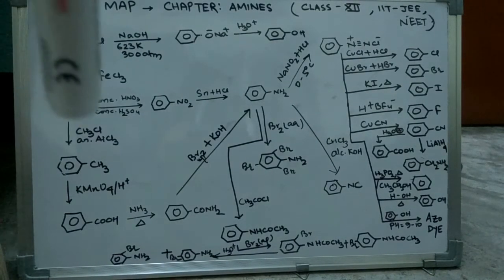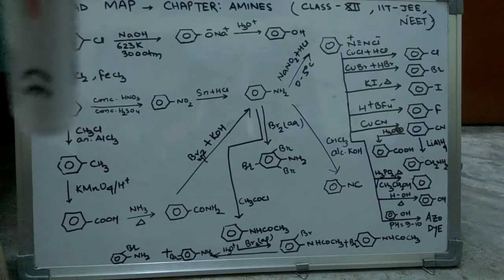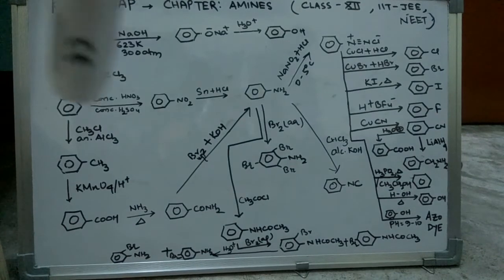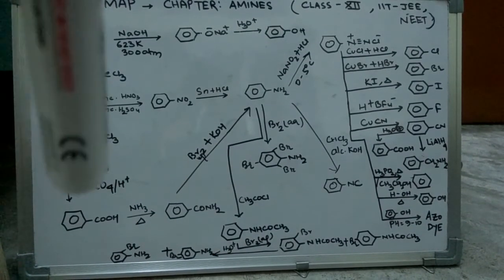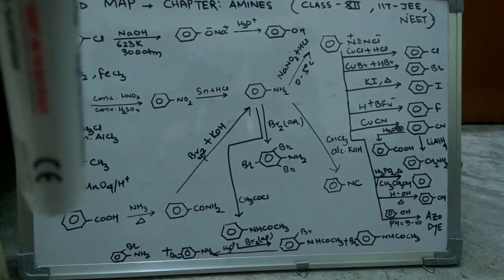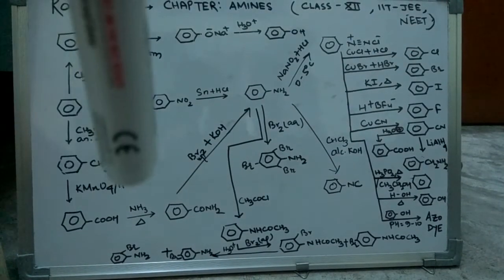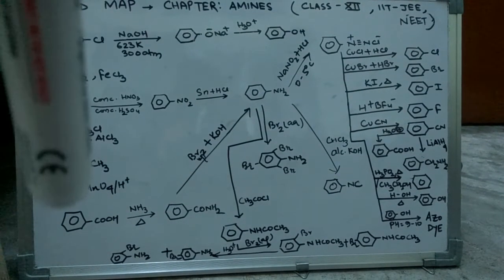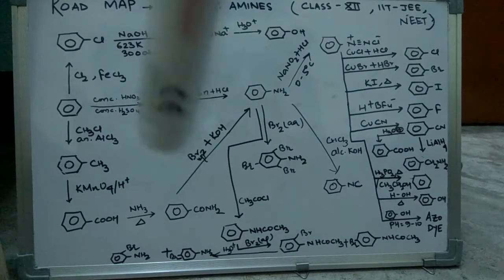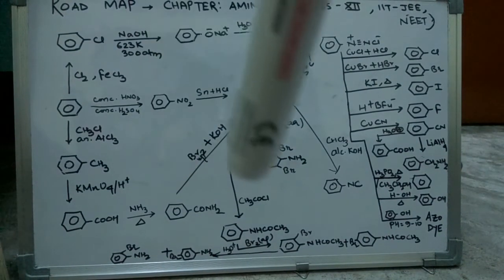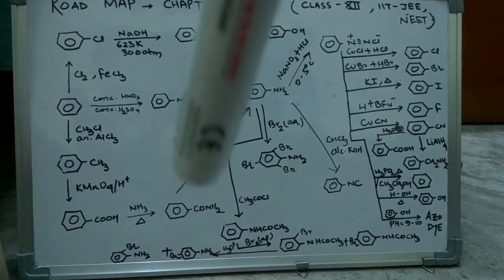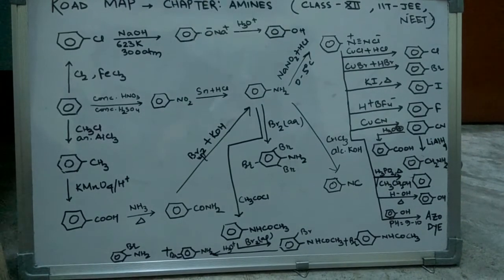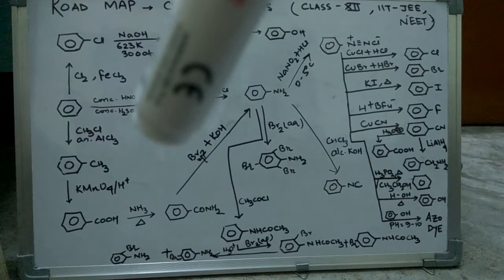Going down from benzene, we get toluene upon application of CH3Cl with anhydrous AlCl3. Then upon adding acidified KMnO4, what we get is benzoic acid.